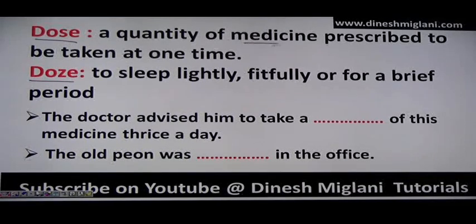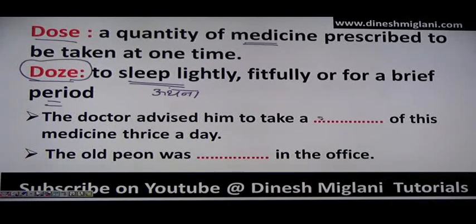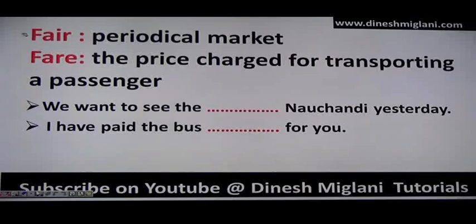Next: 'dose' and 'doze.' Dose is the quantity of medicine prescribed to be taken at one time. Doze means to sleep lightly, fitfully, or for a brief period — in Hindi called 'unghna.' Example: 'The doctor advised him to take a dose of medicine thrice a day.' 'The old person was dozing (D-O-Z-I-N-G) in the office' — meaning sleeping lightly.